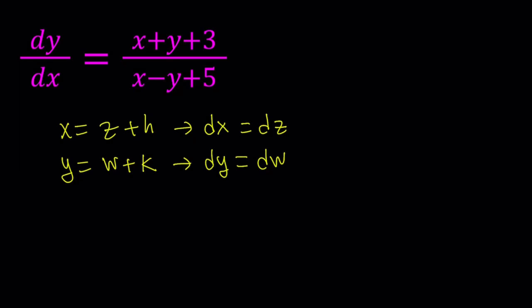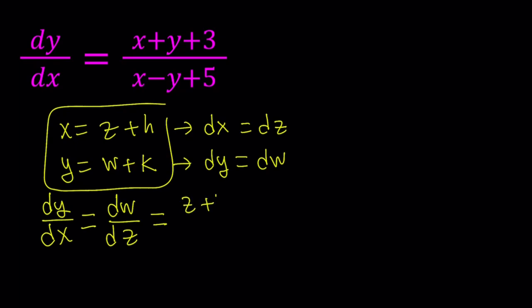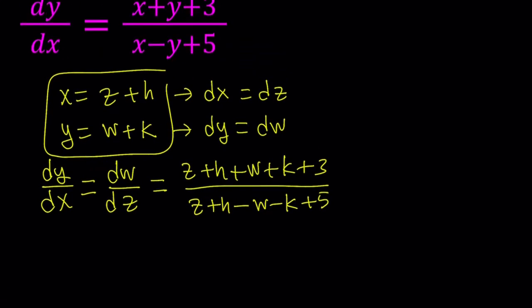So, our original expression contains dy over dx, but right now I can replace dy with dw, and I can replace dx with dz, and then this becomes dw over dz. And here, I can just replace x and y with these. So, let's go ahead and do it. We get z plus h plus w plus k plus 3, and then that is divided by z minus w plus 5. Now, this expression looks more complicated, but don't worry, we're going to simplify it.